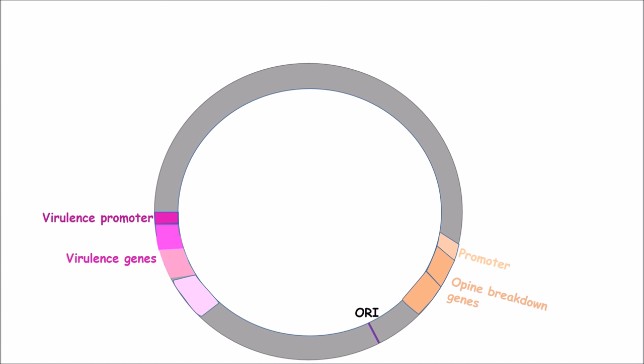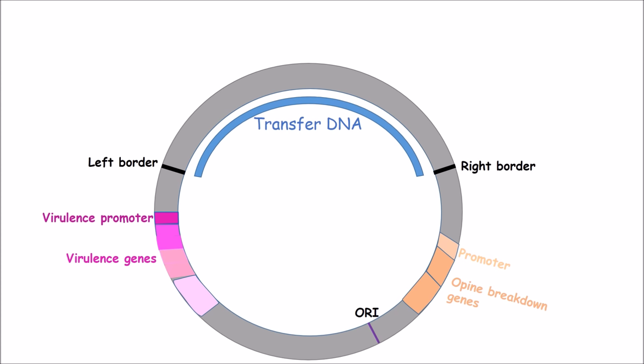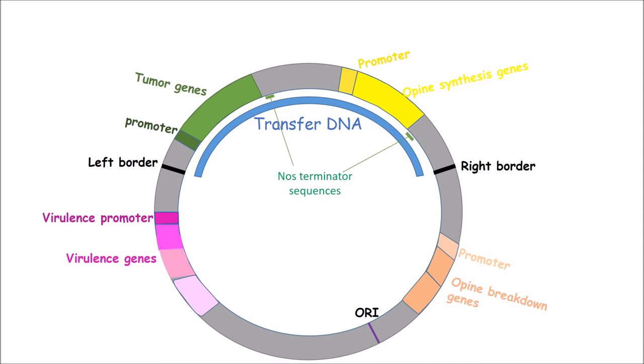A section of the plasmid contains the sequence of DNA that will be transferred to the plant. This segment is called the transfer, or T-DNA, and is defined by a left border and a right border sequence. The transfer DNA contains two main sections: one that contains the genes that trigger tumor formation, and a section that contains the genes to make the opines to feed the agrobacterium. The ends of the sequences to be transcribed in the plant are marked with NOS termination sequences.